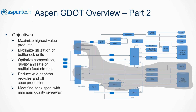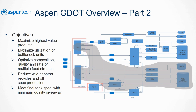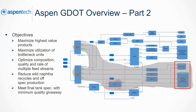GDOT can also be used to optimize middle distillate production. When used for this purpose, GDOT will coordinate CDUs and vacuum distillation units, hydro-desulfurization units, hydrocrackers, and blenders of diesel and jet fuel. GDOT maximizes the highest-value products, volume gain, and use of low-cost feeds and utilization of production bottlenecks.